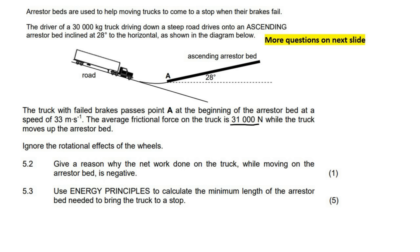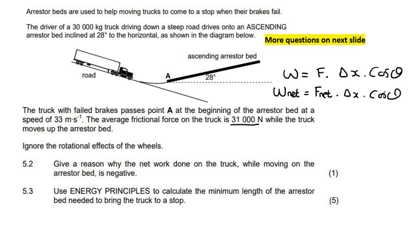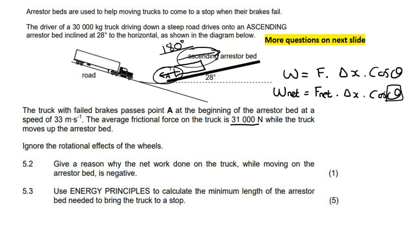Let's look at the basic formula: work equals force times displacement times cos theta. For the net work, you can use F_net. When the truck reaches the arrestor bed, it is going in one direction, but the F_net — the overall forces acting on that truck, which are gravity parallel and friction — are acting in the opposite direction. So the angle between the force and direction of motion is 180 degrees, and cos 180 is negative, making the whole term negative.